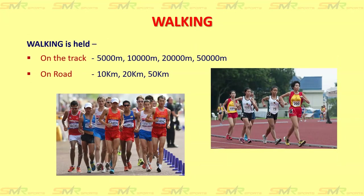The next category is walking. In walking we have two types: one on the track in the stadium and the other on the road. On the track, distances can be 5000 meters, 10,000 meters, 20,000 meters and 50,000 meters. On the road it can be 10 kilometers, 20 kilometers and 50 kilometers. Whenever the event is on the track it is mentioned in meters; when on the road outside the stadium it is mentioned as kilometers.